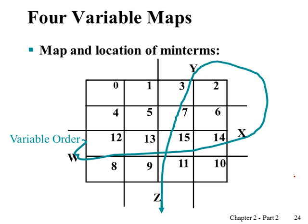A four-variable K-map is constructed as follows: minterm indices zero, one, two, three, four, five, six, seven are the same as a three-variable K-map. Minterm index eight goes to the last row of the K-map, followed by nine, ten, eleven, twelve, thirteen, fourteen, fifteen — in this order so that we can maintain the adjacency property horizontally or vertically.